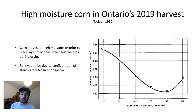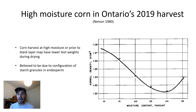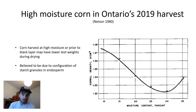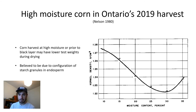Corn test weight was remarkably low in many fields across Ontario in 2019. This was in part due to relatively late planting conditions that many farmers experienced, which caused maturity problems in the fall — the corn crop did not necessarily reach black layer before the first killing frost or before temperatures turned very cold, making the grain fill process very slow. To deal with this high-moisture corn, many farmers decided to dry their corn, either in the field or in a grain dryer, expecting to increase test weight. However, it was often observed that the exact opposite happened — drying corn actually reduced test weight.